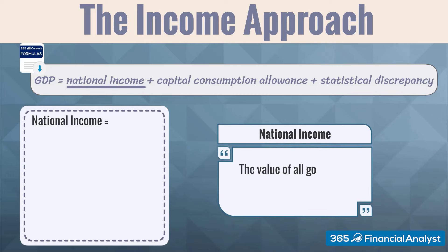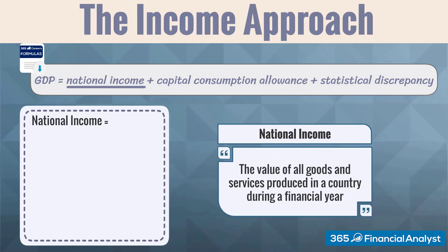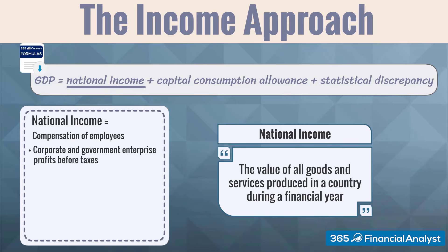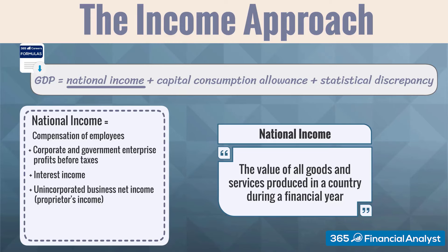In essence, national income is the value of all goods and services produced in a country during a financial year. National income is given by the sum of wages and benefits paid to employees, corporate and government profits before taxes, interest income, unincorporated business net income, rental income, and indirect business taxes less subsidies.